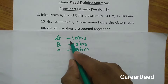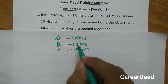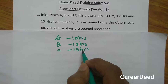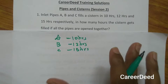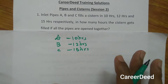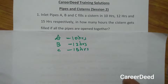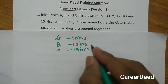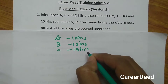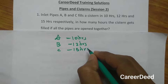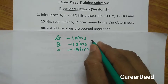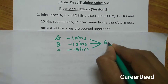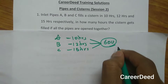So here we totally have 3 pipes — pipe A, B and C — and these pipes fill a cistern in 10 hours, 12 hours and 15 hours. Since we don't know the total capacity of the tank, we can assume any value, but for convenience I am taking the LCM of 10, 12 and 15. LCM of 10, 12 and 15 gives 60. So 60 units is the total capacity of the tank as per our assumption.